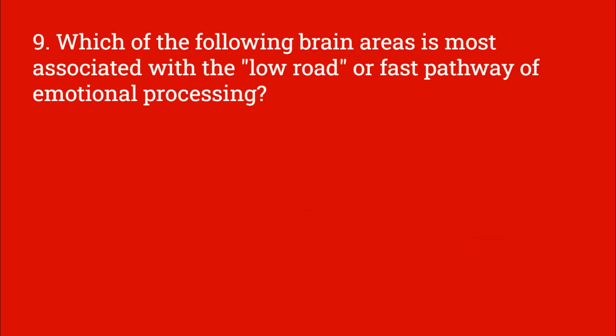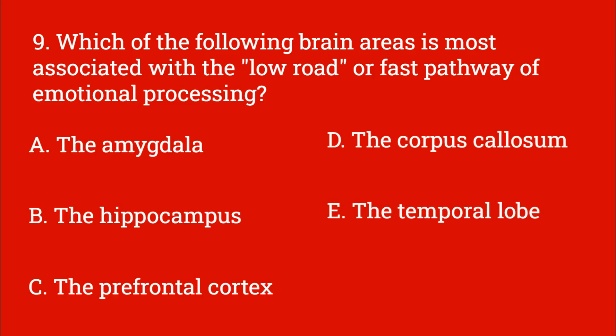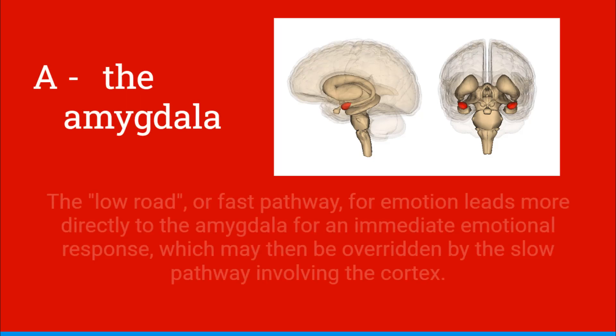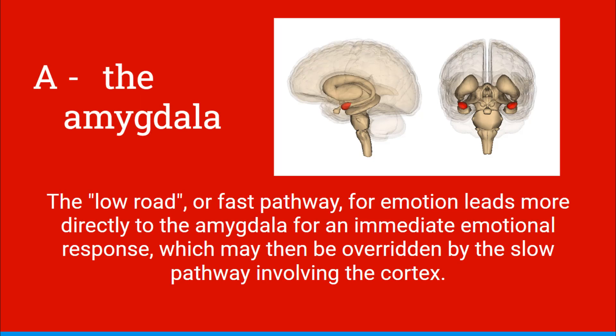Which of the following brain areas is most associated with the low road or fast pathway of emotional processing? The amygdala, the hippocampus, the prefrontal cortex, the corpus callosum, or the temporal lobe. And this would be A, the amygdala. The low road or fast pathway for emotion leads more directly to the amygdala for an immediate emotional response, which may then be overridden by the slow pathway involving the cortex.